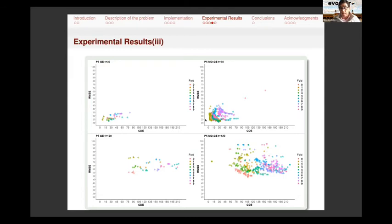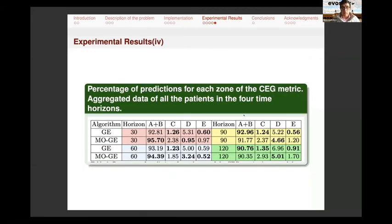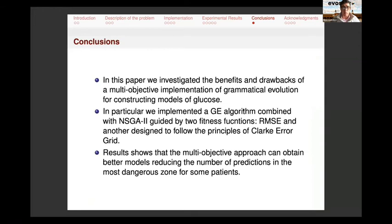Also, it's important. We use these results in recent works for doing the classification of the data as in the previous approach, and we use this for classifying the data and obtaining models for each of the classification instances. Those are the results. As I told you, you can find more recent results in recent papers. And as I told you, the idea of this paper was to analyze the multi-objective implementation. We conclude that the multi-objective approach can obtain better models and reduce the number of predictions in the most dangerous zones for some of the patients. And in combination with other things that we present in recent papers could be a good approach.